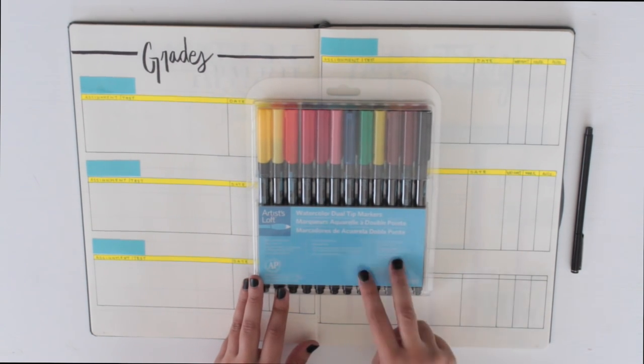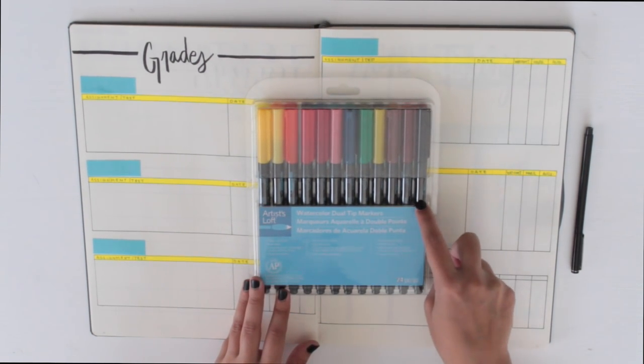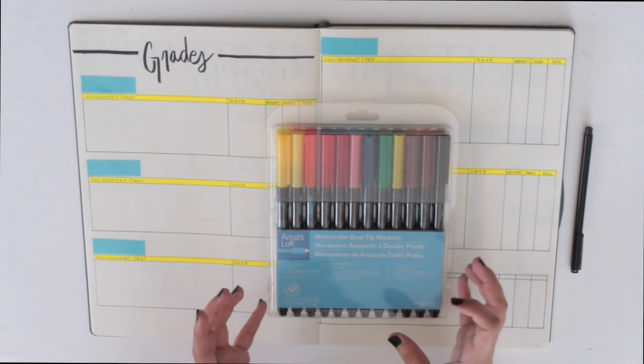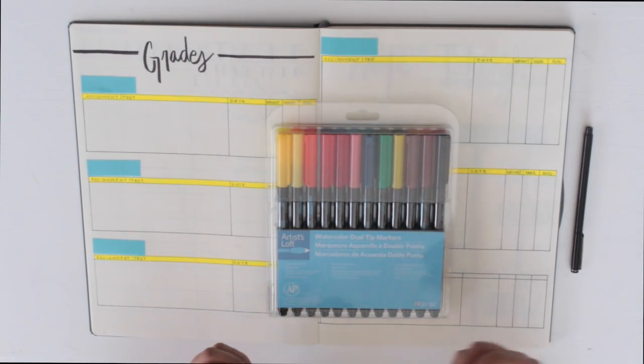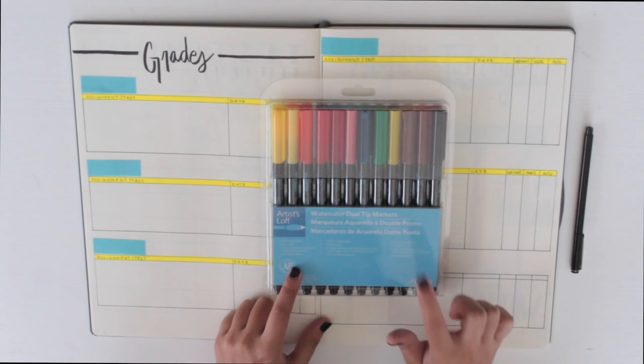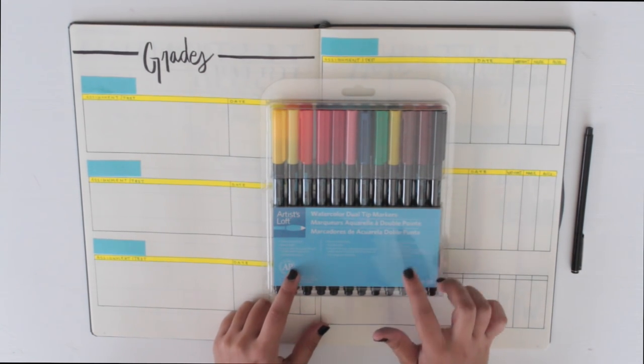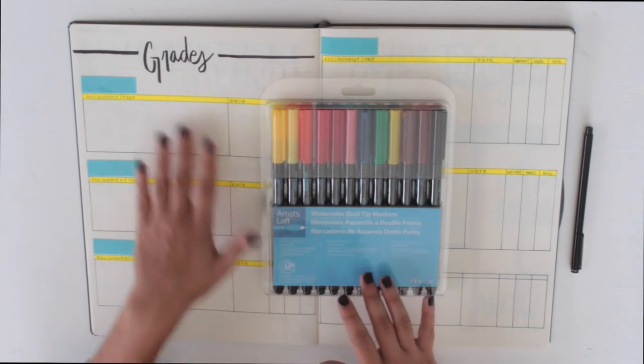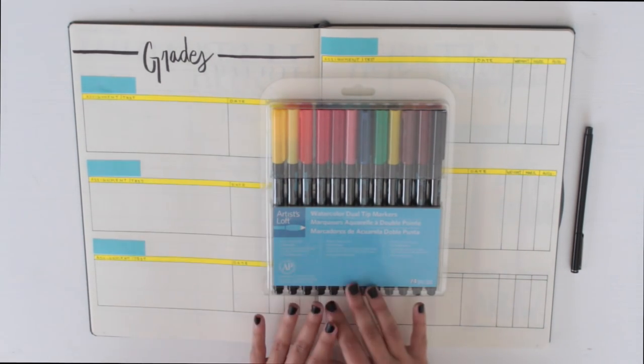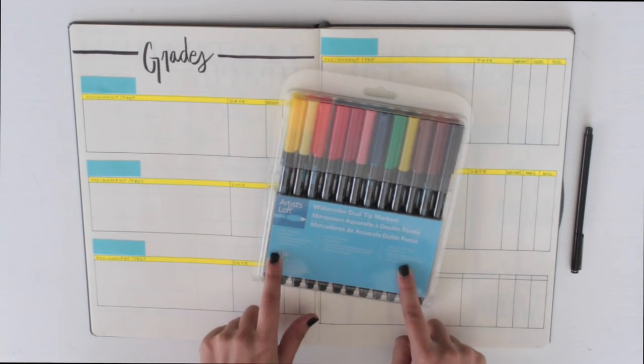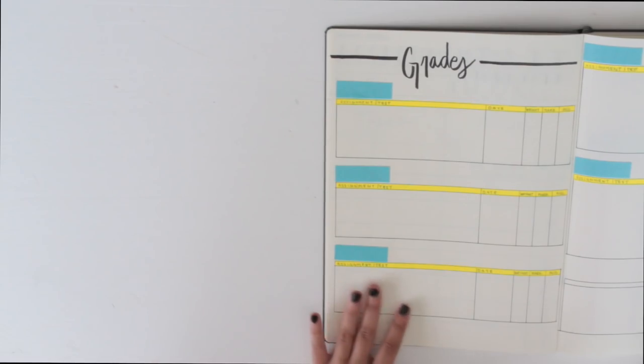It is Artist Loft. You can get these at Michaels. I really loved using the block marker to write this title because these dual tip markers, the brush end is a little stiffer. I felt like I had a little bit more control with these markers, which I think is perfect for lettering specifically. It made writing this really easy. I love the look of it, it's bold, it's beautiful, and I'm excited to experiment with these going forward.